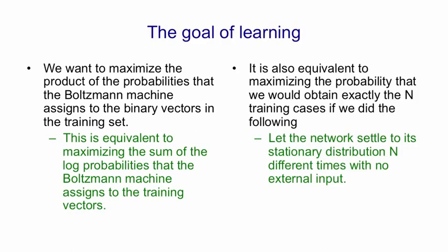First, we let it settle to its stationary distribution n different times with no external input. Then we sample the visible vector once. Then we let it settle again and sample the visible vector again, and so on.